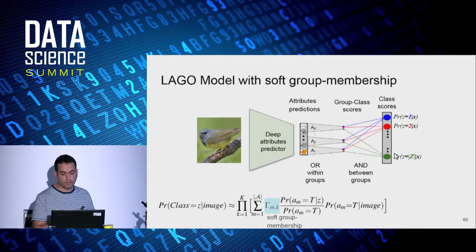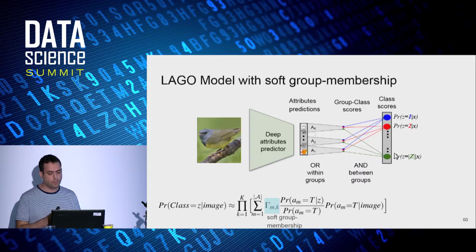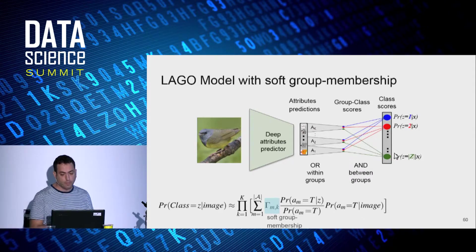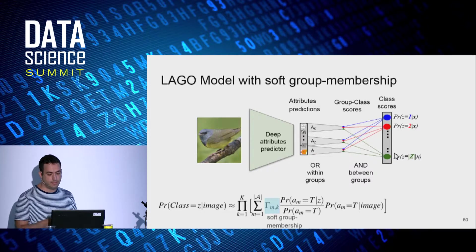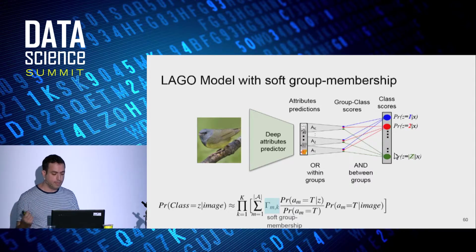Finally, we can also learn the groups from data. With a soft term for group membership, which becomes a model parameter. When semantic groups are given, as the hard case we just seen, it is initialized to 0 or 1. And if we like, we can fine-tune its value during training.